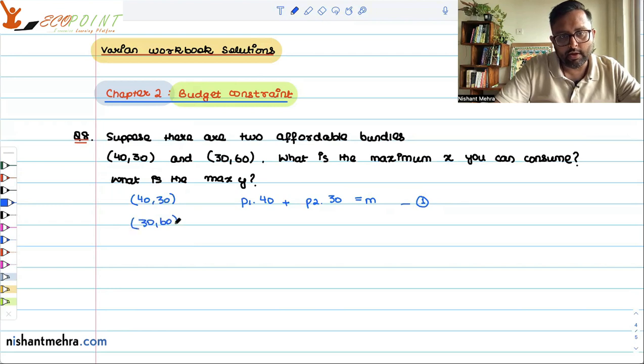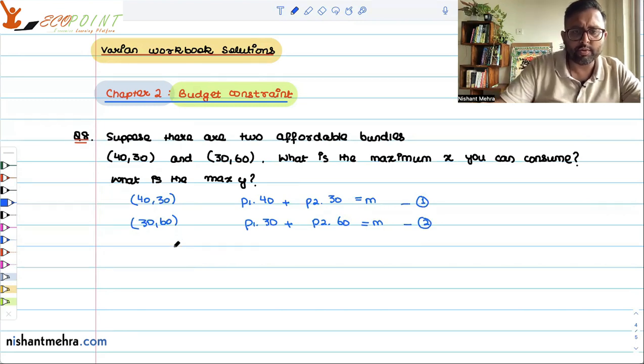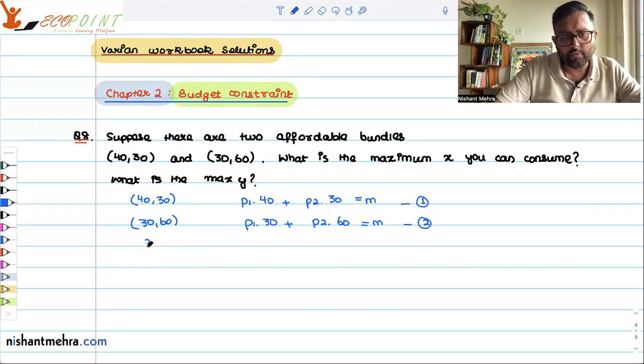Similarly, (30, 60) is also lying on the budget line, so it is p1 times 30 plus p2 times 60 equals m. I can just equate equations 1 and 2.